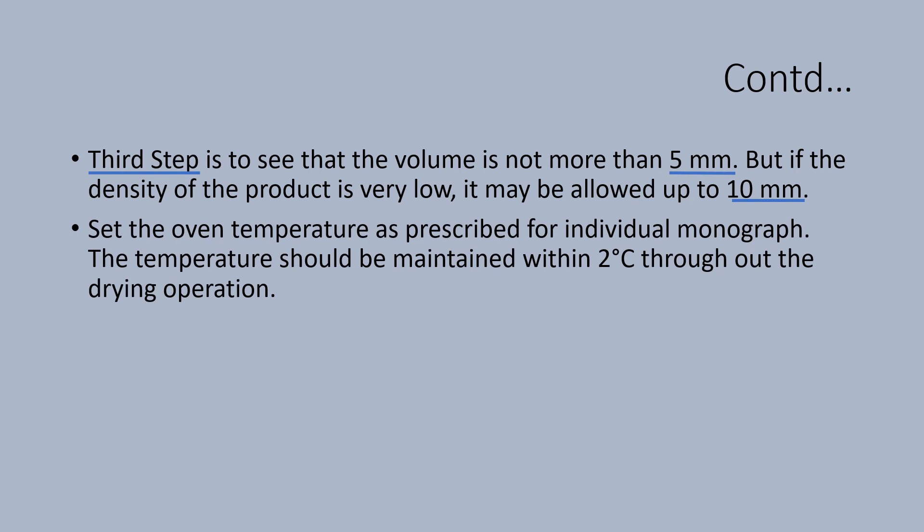Set the oven temperature as prescribed in the individual monograph. The temperature should be maintained within 2 degrees centigrade throughout the drying operation. This must be done much before the start of the test. By the time you start the test, the oven should be ready with the required temperature. It is also important to see that the temperature is maintained within 2 degrees centigrade throughout the analysis. Data loggers with a provision to record the temperature at a specified interval, say every half an hour, is recommended as an objective evidence that the temperature is maintained throughout the test.